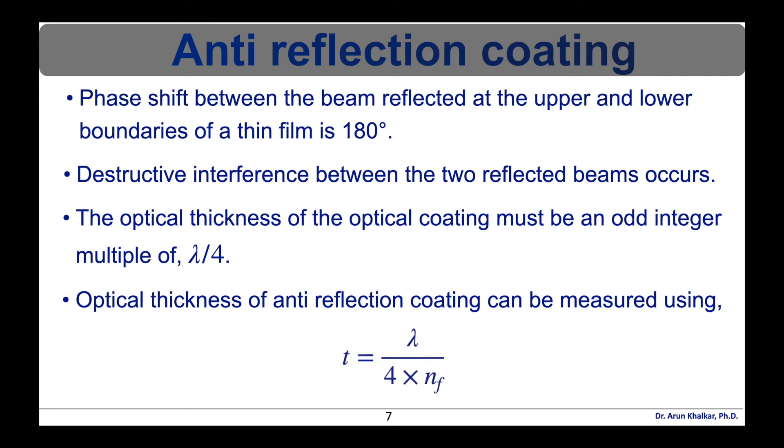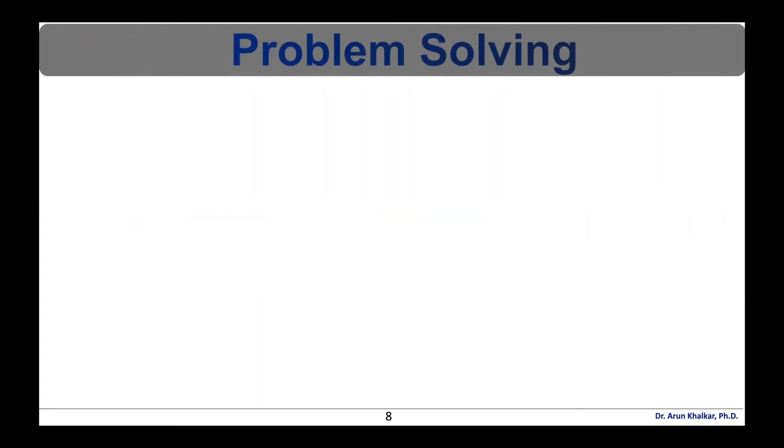The optical thickness of anti-reflection coating can be measured using T is equal to lambda by 4 into NF where T is the thickness of the film lambda is the wavelength of the light and NF is the refractive index of the film. So this is all about the applications of interference which we have seen that is testing of optical flatness and second one is the anti-reflection coatings.